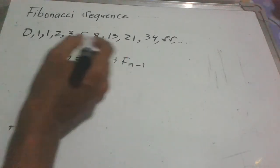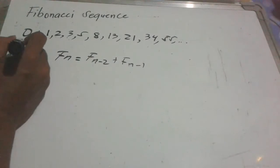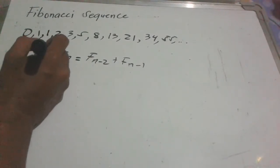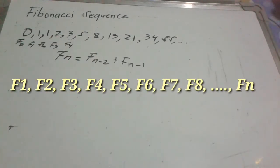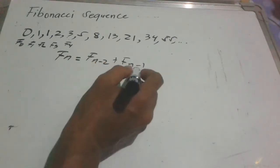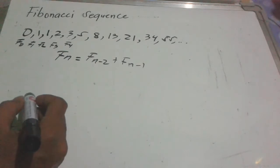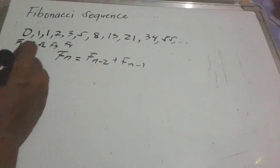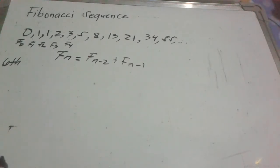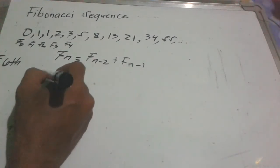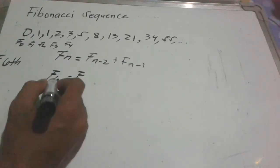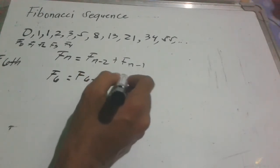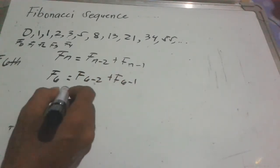By the way, these are the terms of the Fibonacci sequence, starting from F sub 0. Using this formula, let's say we are going to find the sixth term of the Fibonacci sequence. So we find the sixth term using the formula: we have F sub 6.